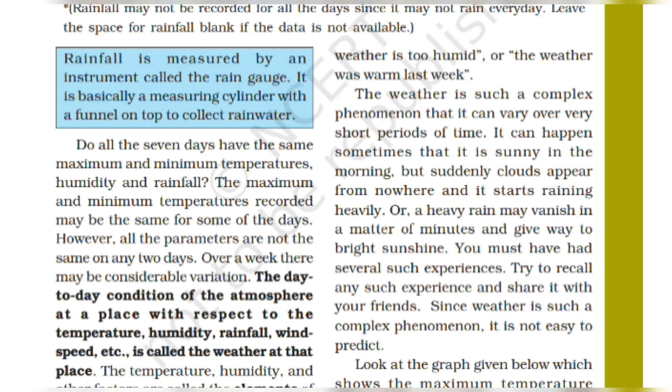The day-to-day condition of the atmosphere at a place with respect to the temperature, humidity, rainfall, wind speed, etc., is called the weather at that place. So jho day-to-day condition of the atmosphere at that place — we call it the weather at that place.